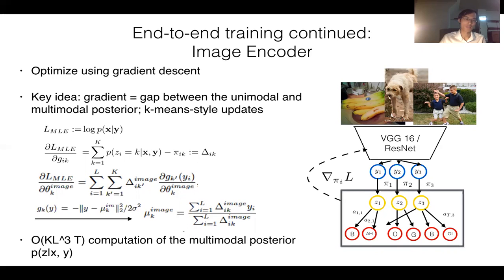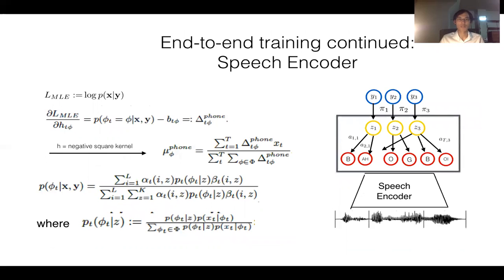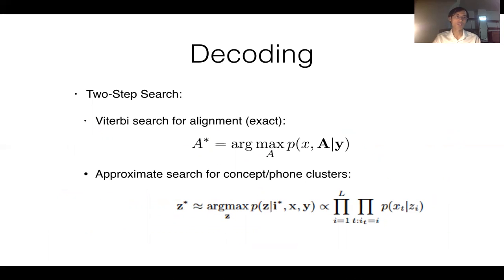Assuming negative square kernels corresponding to a Gaussian distribution, we can update the centroids for the concepts using a K-means style algorithm, which has very efficient runtime. Similarly, we can train the speech encoder in the same way — again with a gap between the unimodal and multimodal posteriors, which can be computed easily as a byproduct during the forward-backward algorithm. Finally, to decode the optimal concepts, phones, and alignments, although it is expensive to decode all three hidden variables jointly, we use a two-step approach: finding the optimal alignment exactly using Viterbi search, then using approximate search to find the concept and phone labels given the optimal alignment.